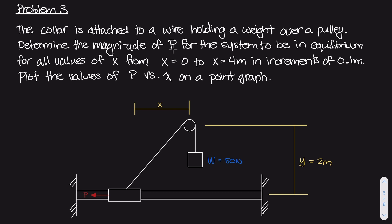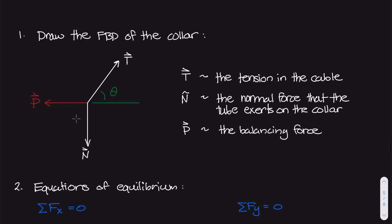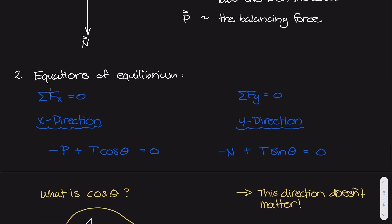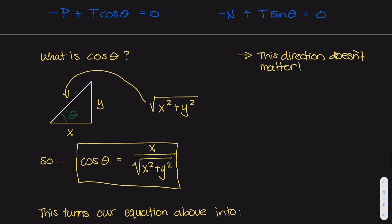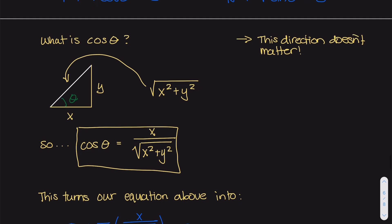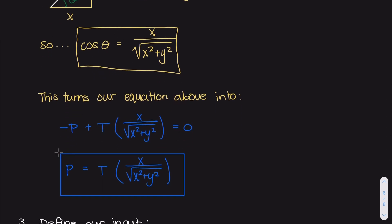The problem wants us to figure out what this P force is for every value of x from 0 all the way up to 4, in increments of 0.1 meters. Once we have P forces for all those increments, we want to graph that on a plot — P versus x — in Python. We drew the free body diagram of the collar, figured out our equations of equilibrium, summed forces in the x and y directions to zero, and determined that cosine theta equals x over the square root of x squared plus y squared.